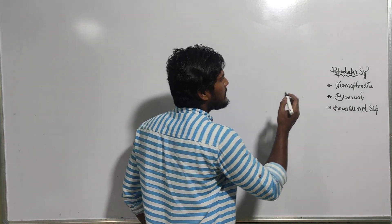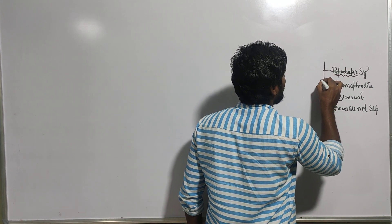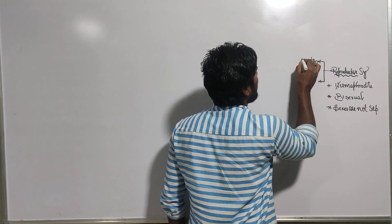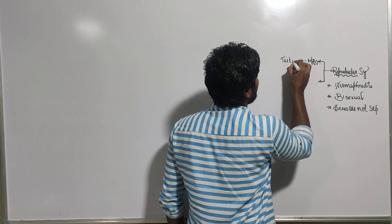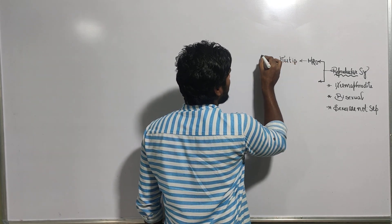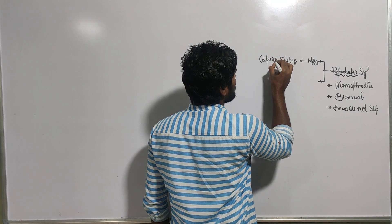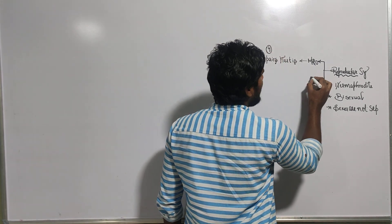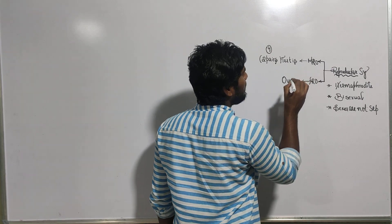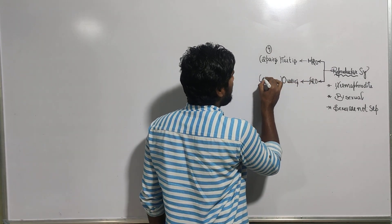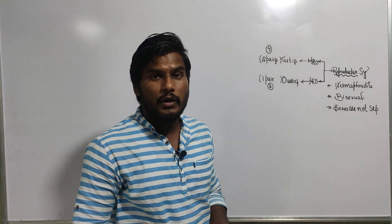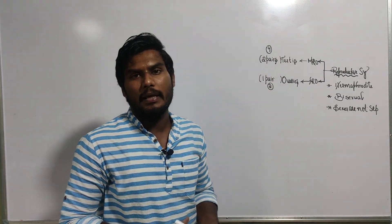The main male reproductive organ is the testis. The earthworm contains two pairs of testis — four in total. The female reproductive organ is the ovary. There is one pair of ovaries, meaning two ovaries are present. So testis: two pairs, four in number; ovaries: one pair, two in number.